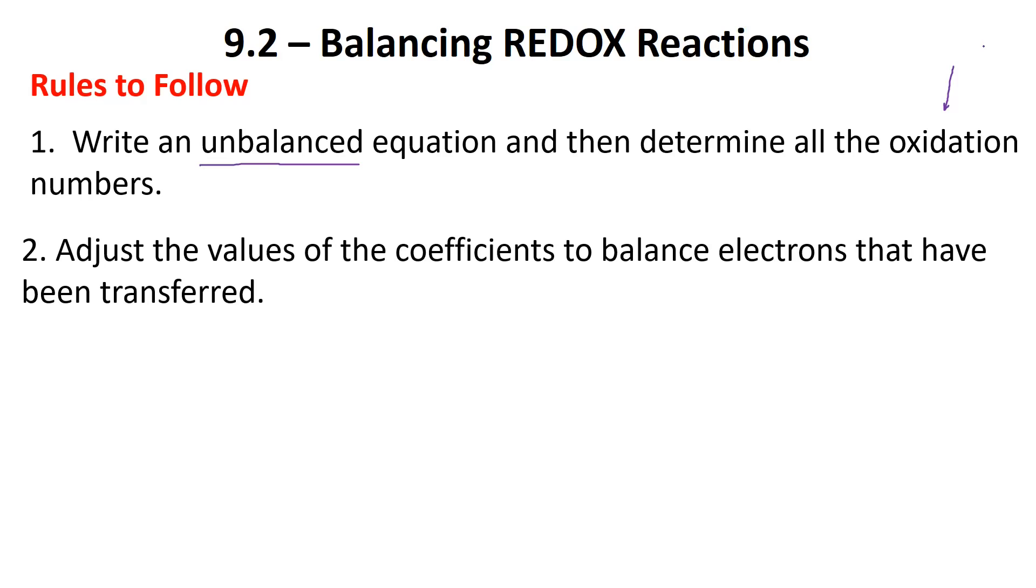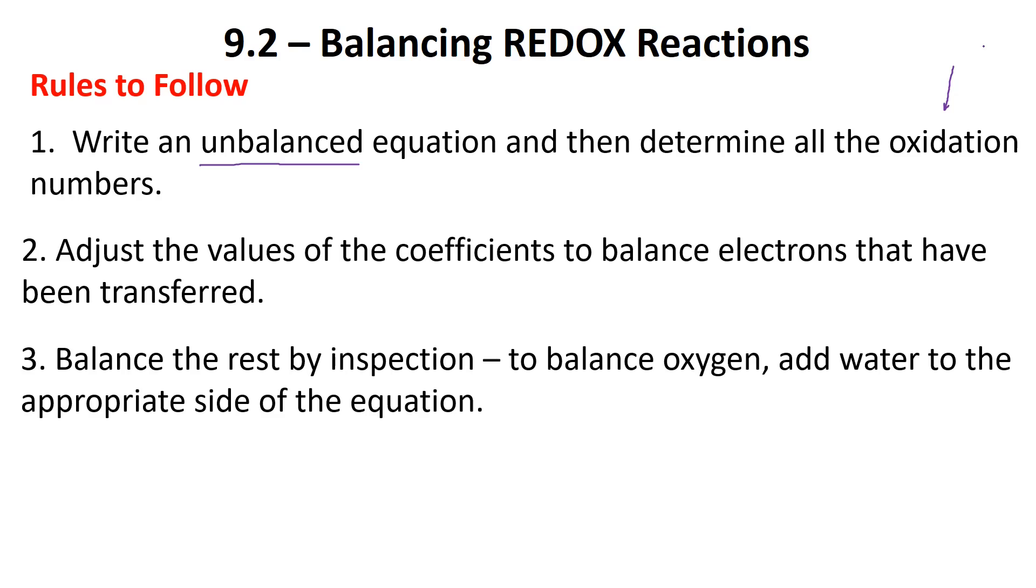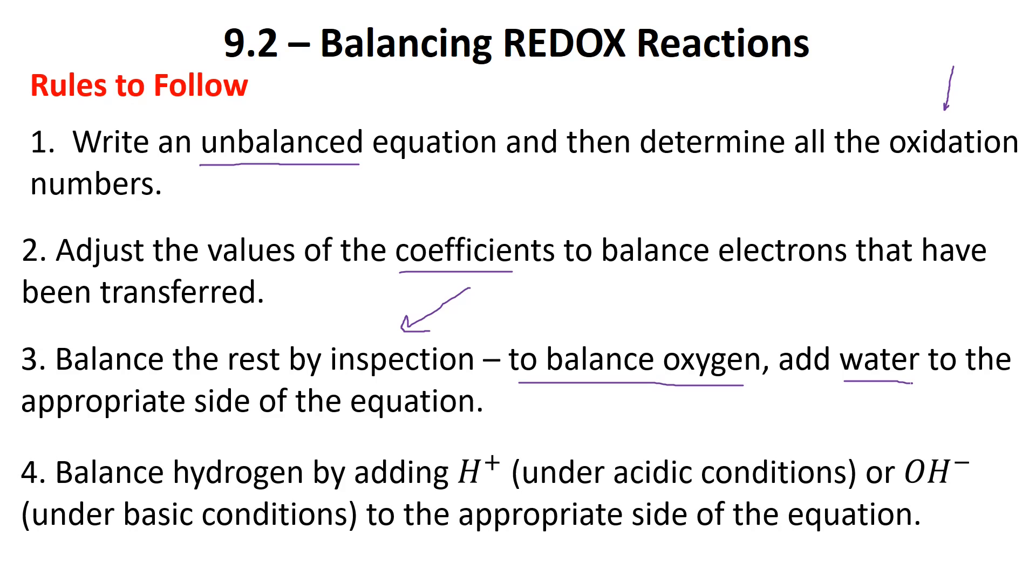Once we've completed the equation, we're going to add some coefficients related to the electrons that are transferred. These numbers are going to be on the reactant side. Then you go to the product side and balance by inspection. Sometimes you realize we don't have any oxygens there, and to balance the oxygen, we add some water.